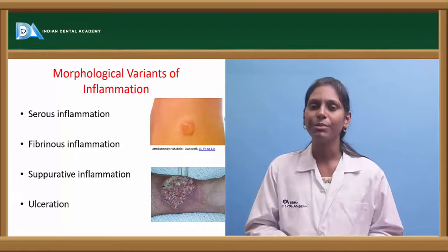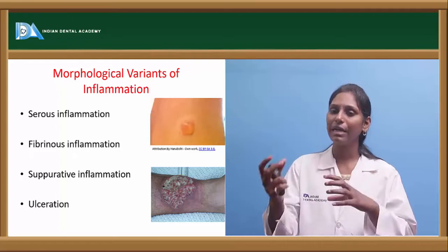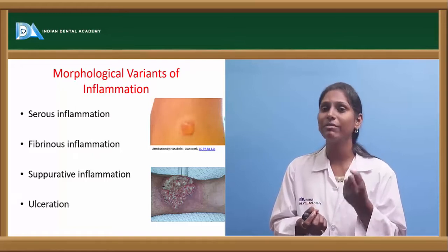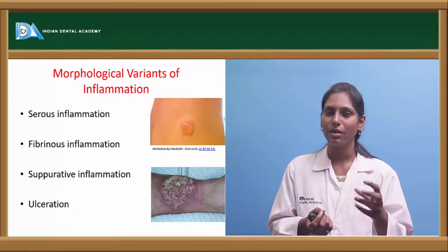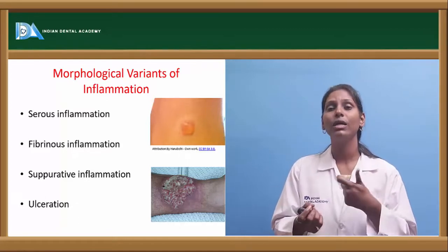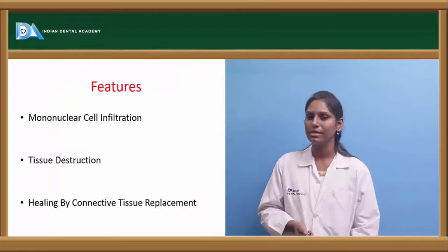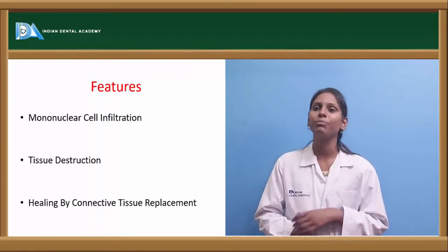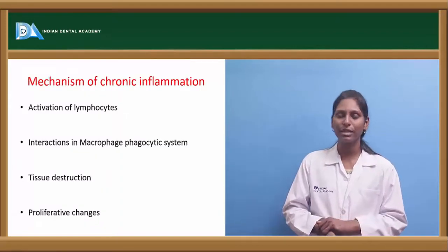The morphological variants of inflammation based on content include: serous inflammation, where the end product is serous fluid forming blisters or vesicles; fibrinous inflammation, where the end product is fibrinous material with fibrosis as a sequela; and suppurative inflammation, where the inflammatory process leads to exudative lesions with pus discharge and ulceration. Features of chronic inflammation include mononuclear cell infiltration, tissue destruction, and healing via connective tissue replacement.